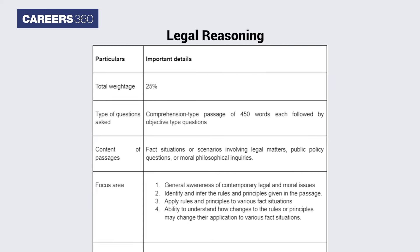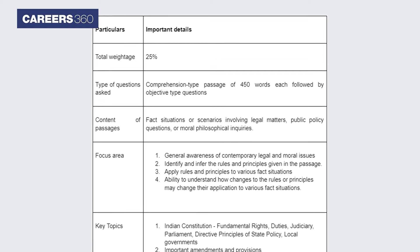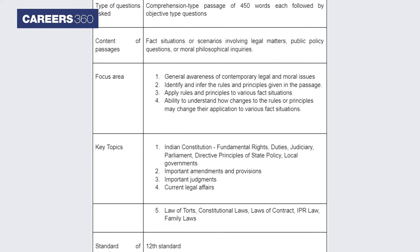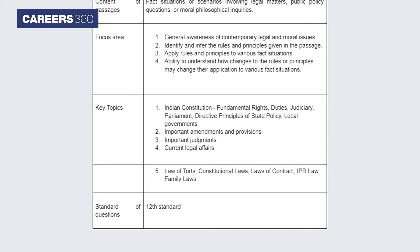The legal reasoning section of CLAT will contain comprehensive-type passages of 450 words each, followed by objective-type questions. This section will test candidate skills in general awareness of contemporary legal and moral issues, identifying and inferring the rules and principles in the given passage, applying rules and principles to various facts and situations, and their ability to understand how changes to the rules or principles may change their application to various facts and situations.